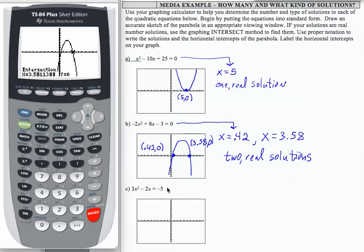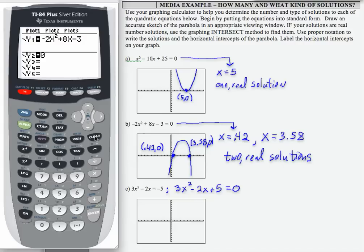Looking at the last problem, we need to start by putting this in standard form, which means setting it to zero. So I'm going to need to add five to both sides. It gives me a new quadratic equation. Go to my y equals, clear y1, and enter 3x squared minus 2x plus 5. Now I'm on a standard window, I already know, so I'm going to press graph and see what I get.